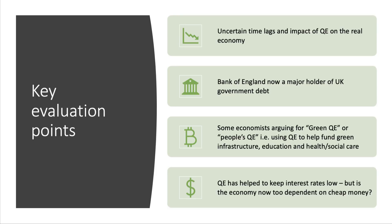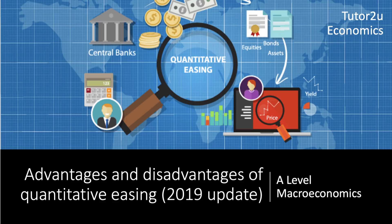My final evaluation point is that QE has certainly helped to keep interest rates very low in the UK — both base interest rates and bond yields. A good evaluation point is to ask: is the UK economy now too dependent on cheap money? Shouldn't interest rates, ten years after the last recession, be closer to a normal level of three, four, or possibly five percent? Perhaps the UK needs to move back towards normal interest rates so that you have more flexibility if economic conditions worsen. QE is quite complicated, but certainly well worth knowing quite a bit about. With some good advantages and disadvantages in your notes, you should be in good shape for the exams.